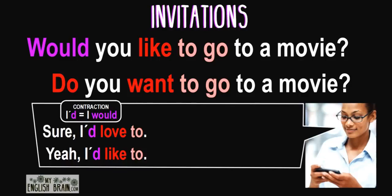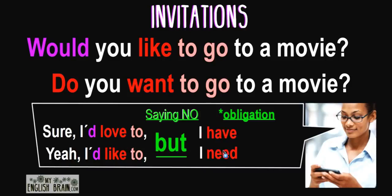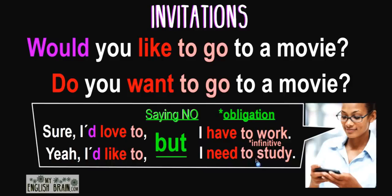When we want to say no to an invitation, to be polite, we use the short form to accept and then use the word 'but' to show that we have an obligation and cannot go. So we say: Sure, I'd love to — but I have to work. That's the obligation. Or: Yeah, I'd like to — but I need to study. Again, the obligation is shown with 'need to' or 'have to.'